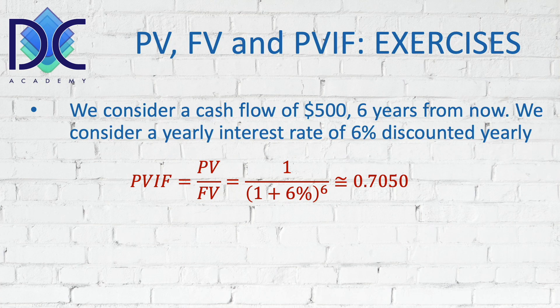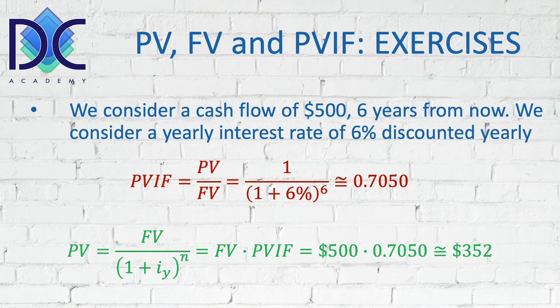Now we have the PVIF, and based on this we can easily calculate the present value. From the PVIF formula, the present value is the future value multiplied by the present value interest factor. Using the future value of $500 and multiplying by the PVIF of 0.7050, we find a present value of approximately $352.